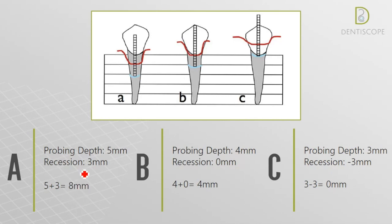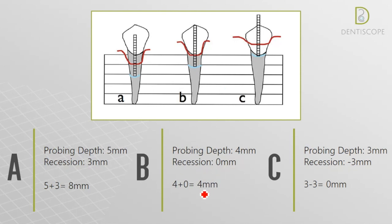In scenario B, the probing depth is four millimeters, but there is no recession because the gingival margin lies on the cemento-enamel junction. So four plus zero recession gives a clinical attachment loss of four millimeters.